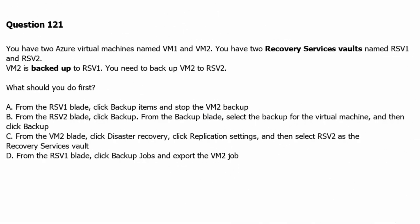Question 121: You have two Azure virtual machines named VM1 and VM2, and two recovery service vaults named RSV1 and RSV2. VM2 is backed up to RSV1. You need to backup VM2 to RSV2. What should you do first? In this question we just need to change the recovery service vault from RSV1, which is the existing one, to RSV2 for VM2.